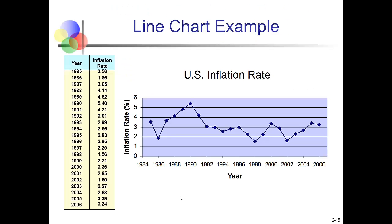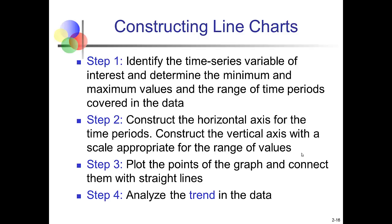So an example of a line chart. The U.S. inflation rate. In Econ 200, you would have talked about inflation. So we see different inflation rates in different time periods. How do we actually construct this line chart? Well, we identify the variable of interest. This is going to be a time series variable. We determine the minimum and maximum values and the range of time periods covered in the data. That's going to allow us to set up the axes properly. Construct the horizontal axis to represent time periods and the vertical axis to represent the variable of interest. Ensuring that the scale matches the range of values for our variable. Then you plot the points and connect the points with a straight line. Analyze the trend in the data. Over time, what is happening with that variable?